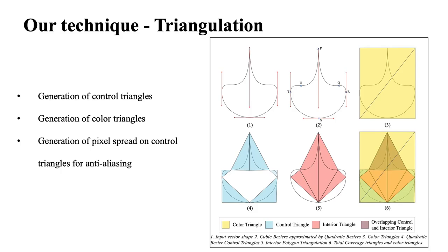Let's now talk about our solution. First phase is triangulation of geometry on CPU. Given an input cubic Bezier curve, we start by approximating it into quadratic Bezier curves. We create interior triangles by joining contiguous end points of quadratic Bezier curves.